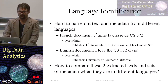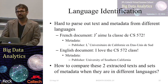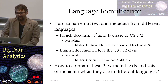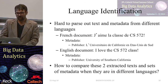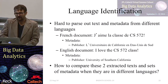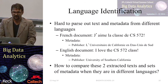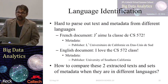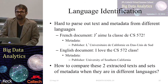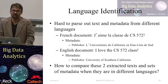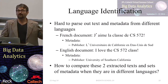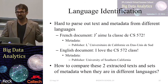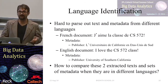It's also important to understand language. When parsing text and metadata out of different file types, you really need to understand the language they're in. For example, a French document saying 'J'aime la classe de CS572' with publisher metadata 'L'Université de Californie Etats-Unis du Sud' is equivalent to an English document saying 'I love the CS572 class' published by the University of Southern California. How do you compare extracted text and metadata from these two documents without understanding one is French and one is English? From a content detection and analysis perspective, we need automated means for language identification.